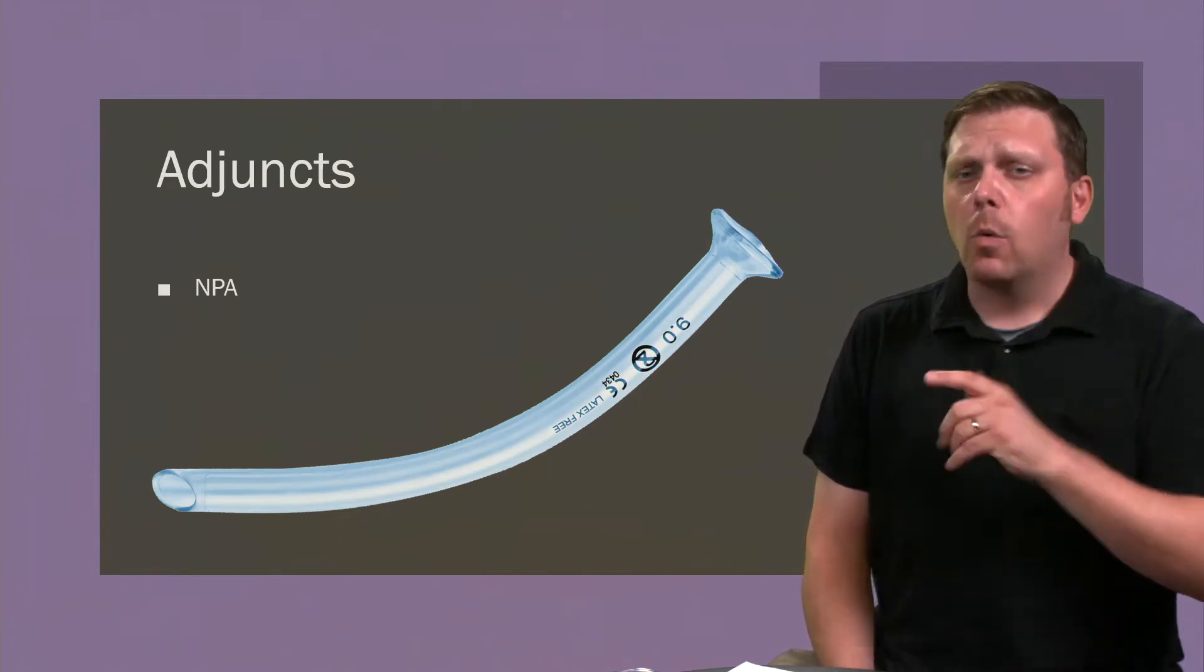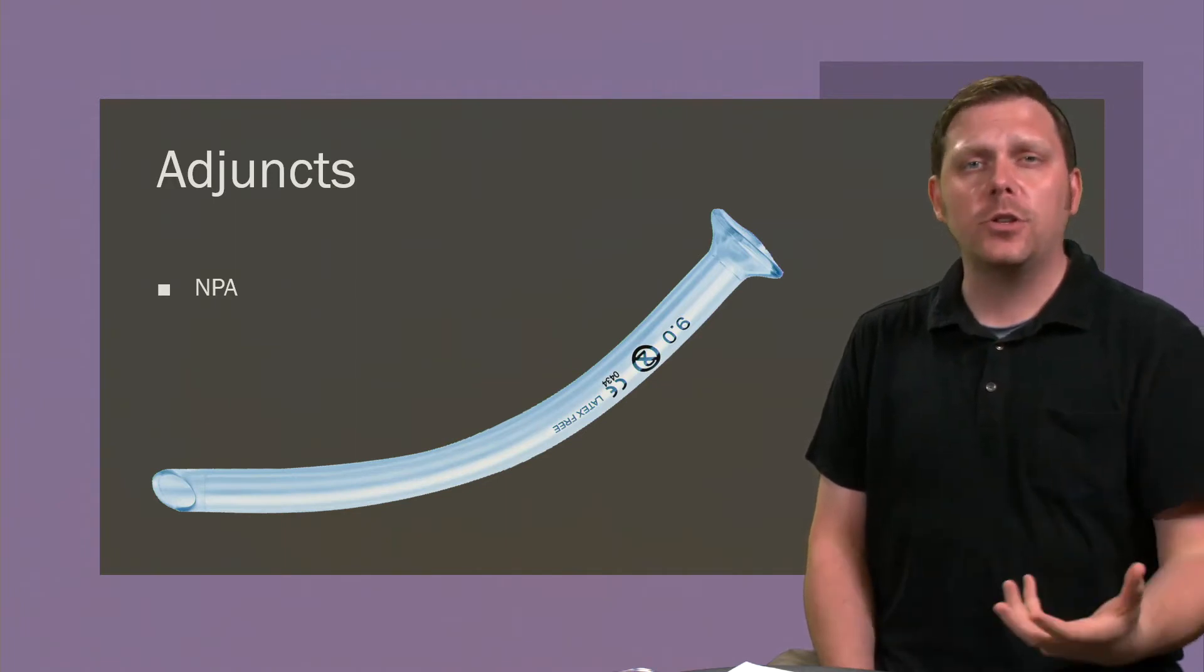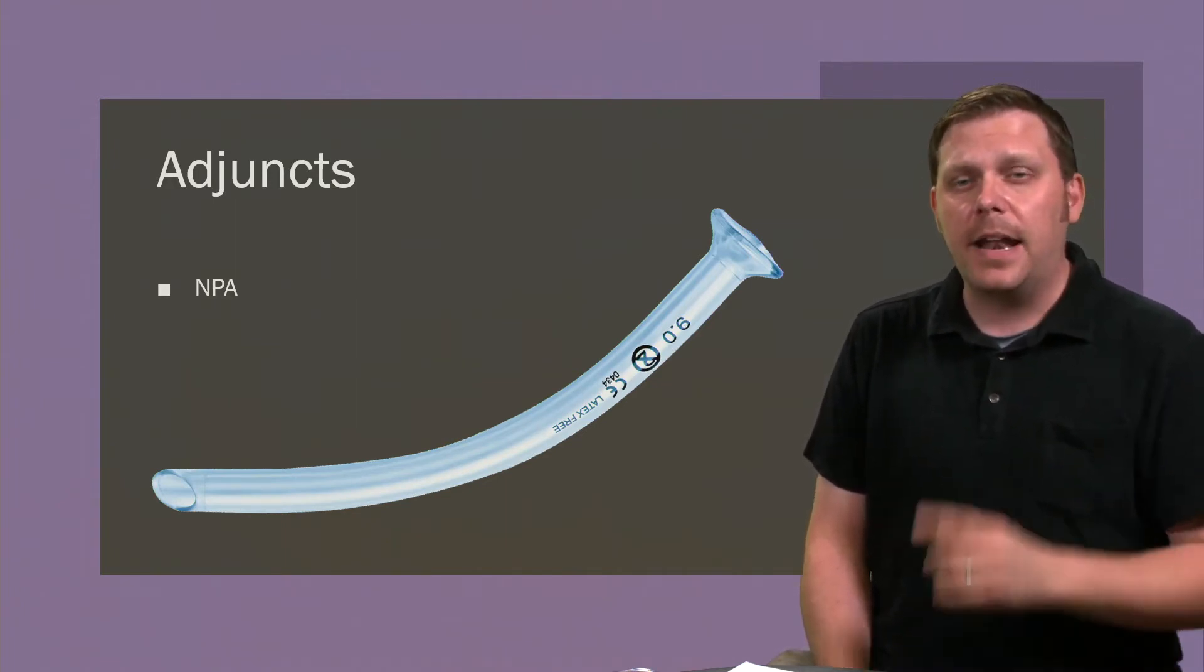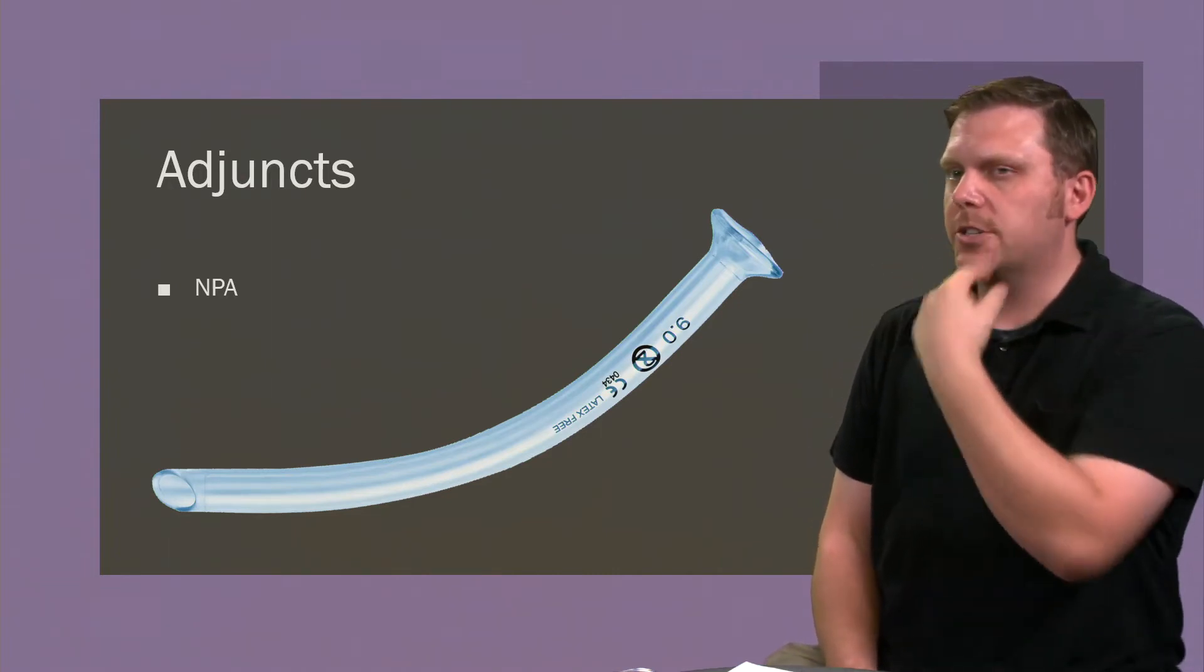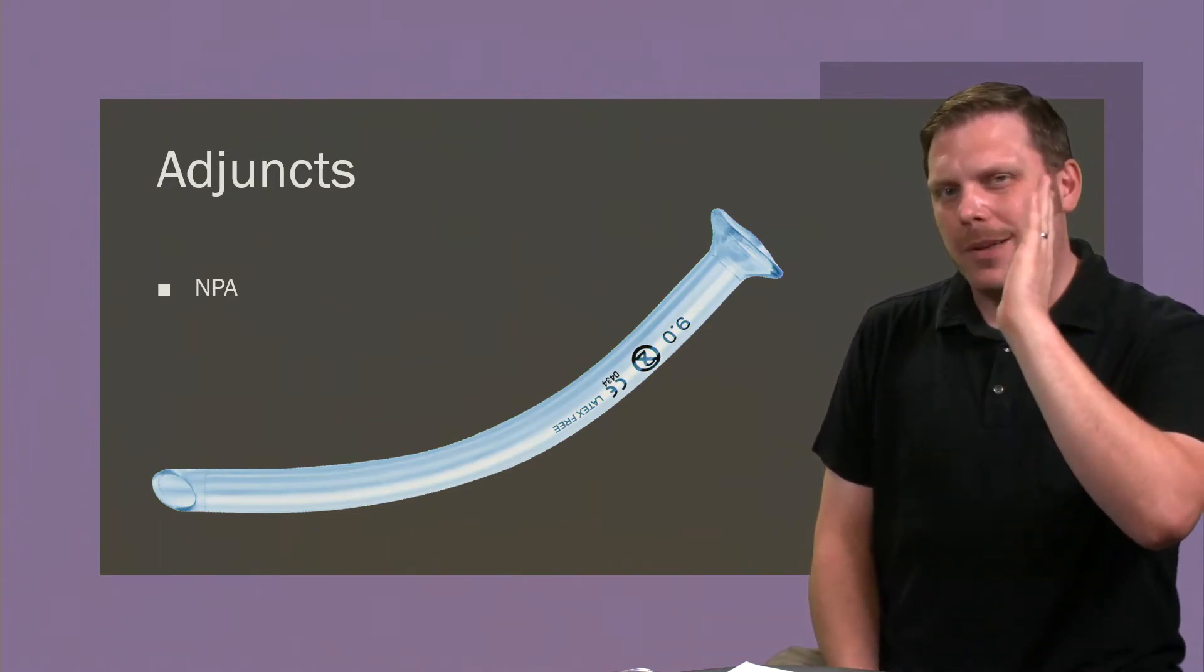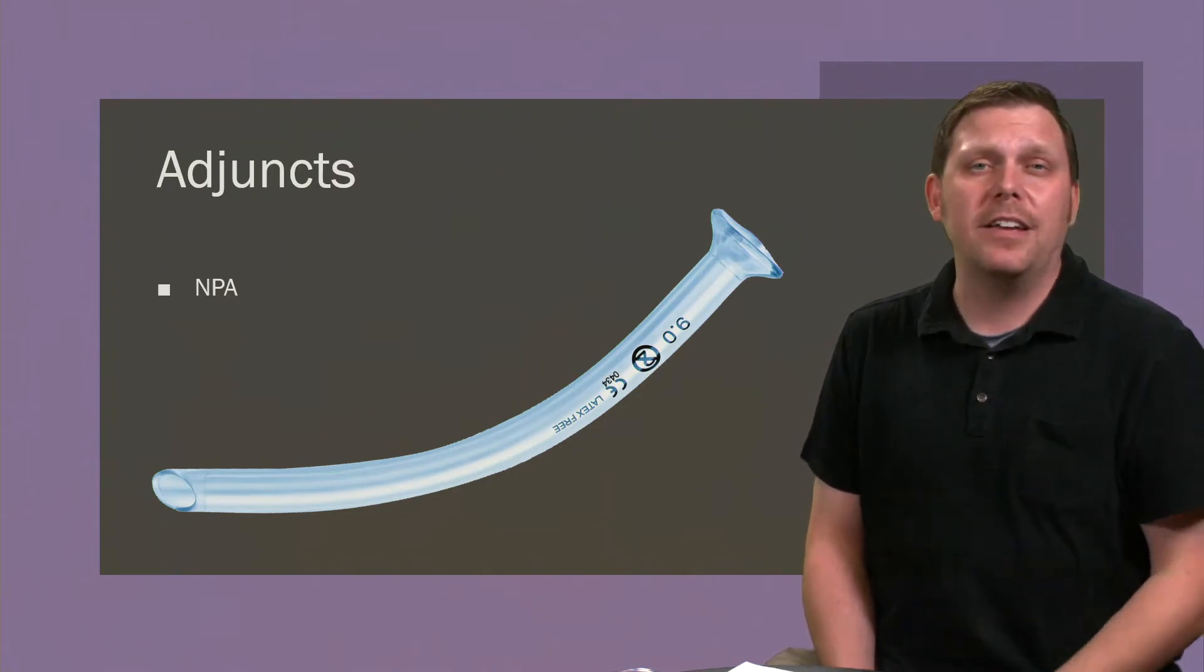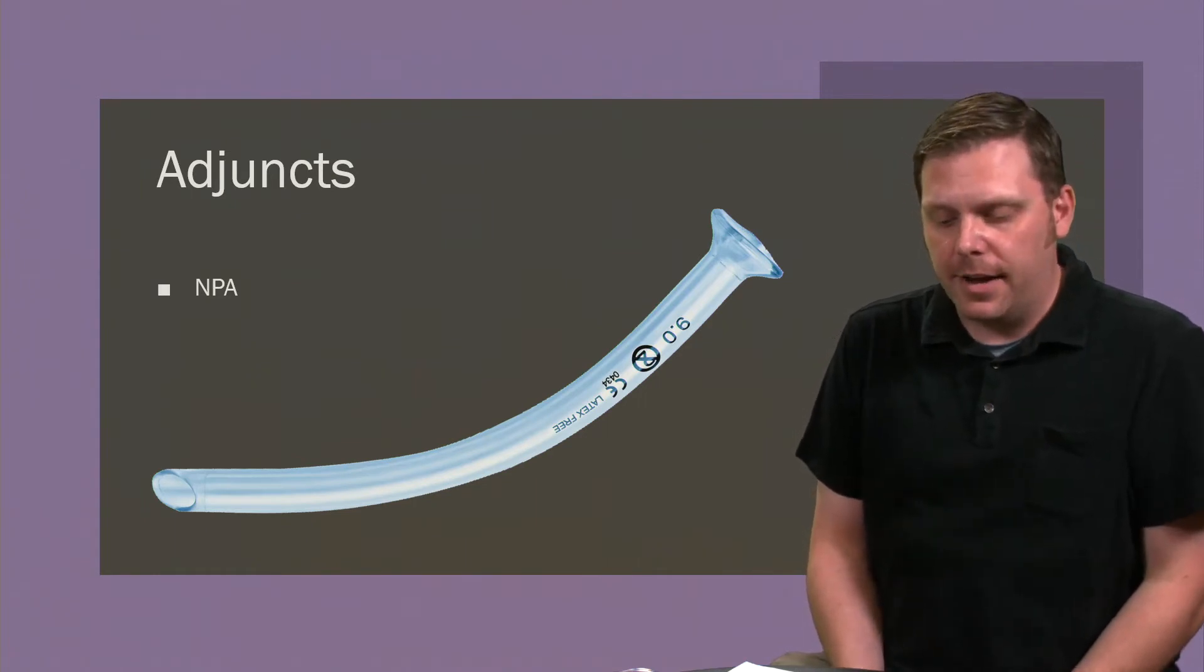Once we've measured, we're going to go bevel towards the septum inside of the nose. Make sure you lube up your NPAs. We never put in a dry NPA. And then as we push it past the nare, we flatten it out and we go at a 90 degree angle straight into the nose. The nasal passage doesn't go up, it goes straight back. So if you ride the top of it, you run the risk of increasing bleeding through the nasal passages and then you have a little bit more of a mess on your hands.